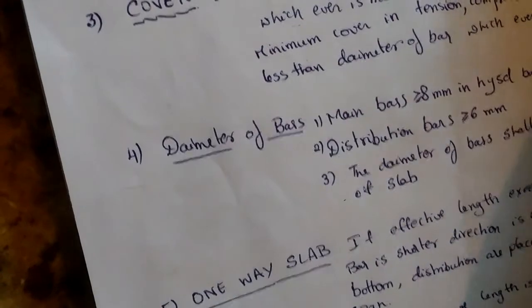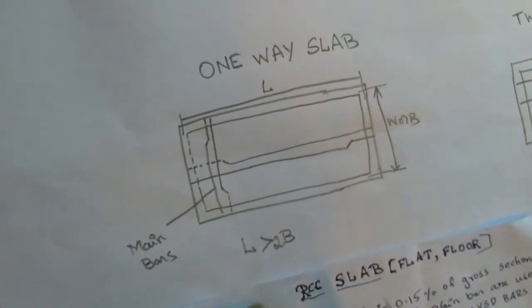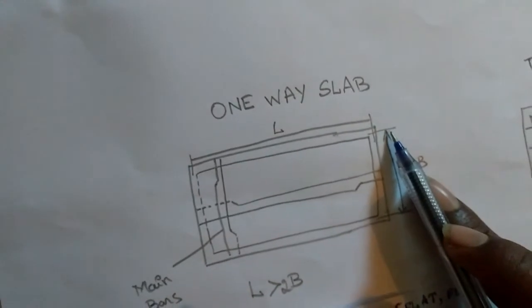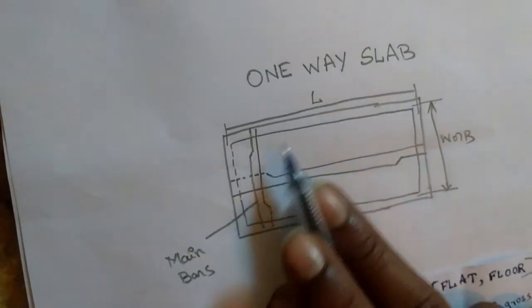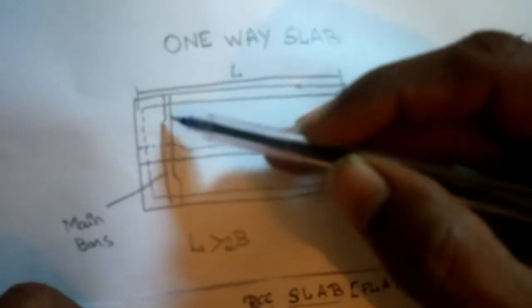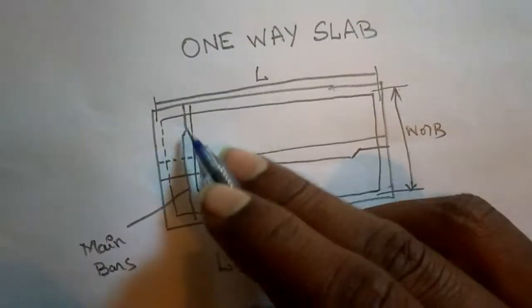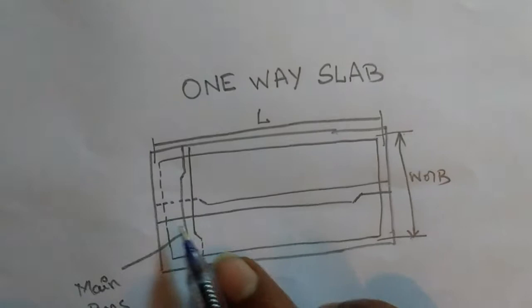For a one-way slab, if the effective length is more than two times the effective width of the slab, it is called a one-way slab. The bars in the shorter direction are called main bars and are placed at the bottom of the slab. The bars in the longer direction are called distribution bars and are placed above the main reinforcement.